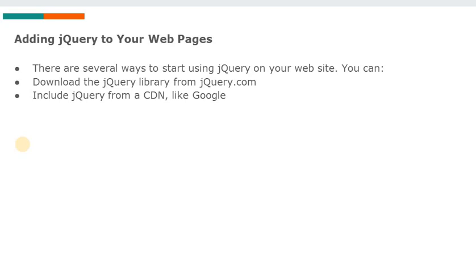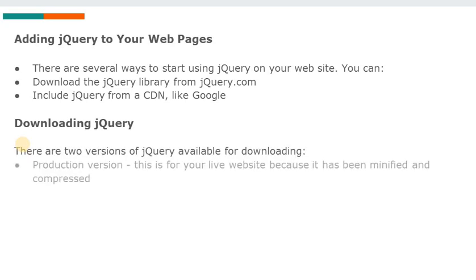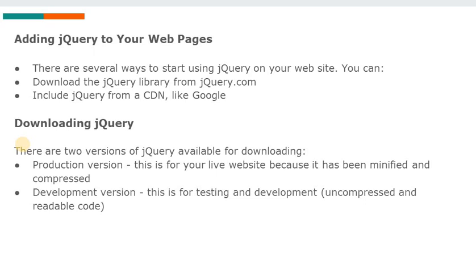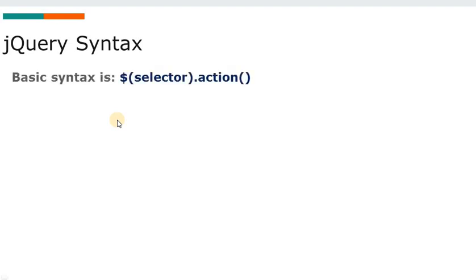When downloading jQuery there are two versions. The first is the production version, for your live website, because it has been minified and compressed. The second is the development version, used for testing and development — uncompressed and readable code. Both versions can be downloaded from jQuery.com.